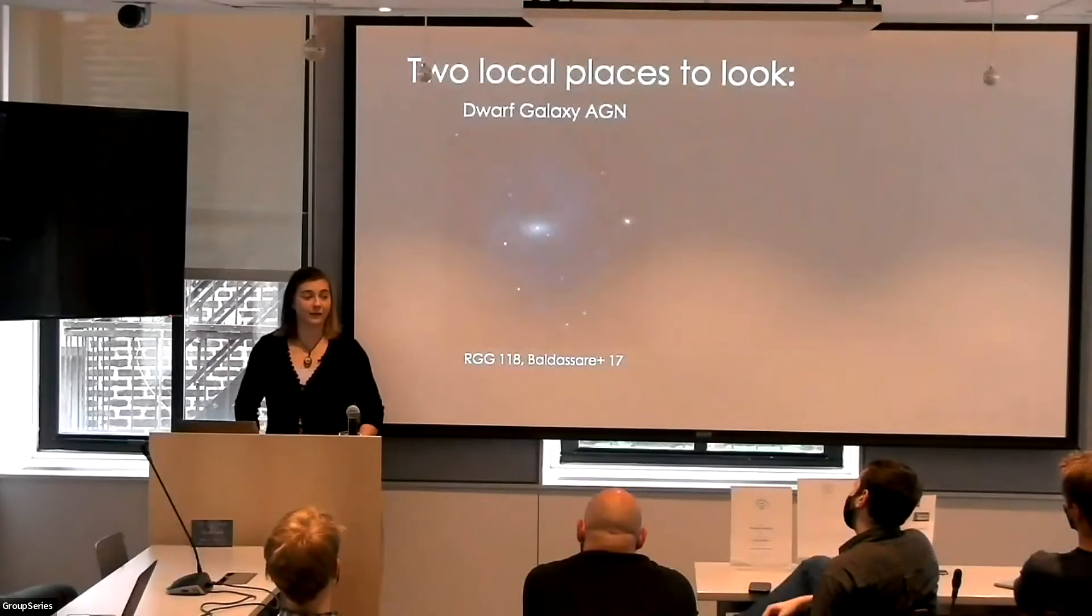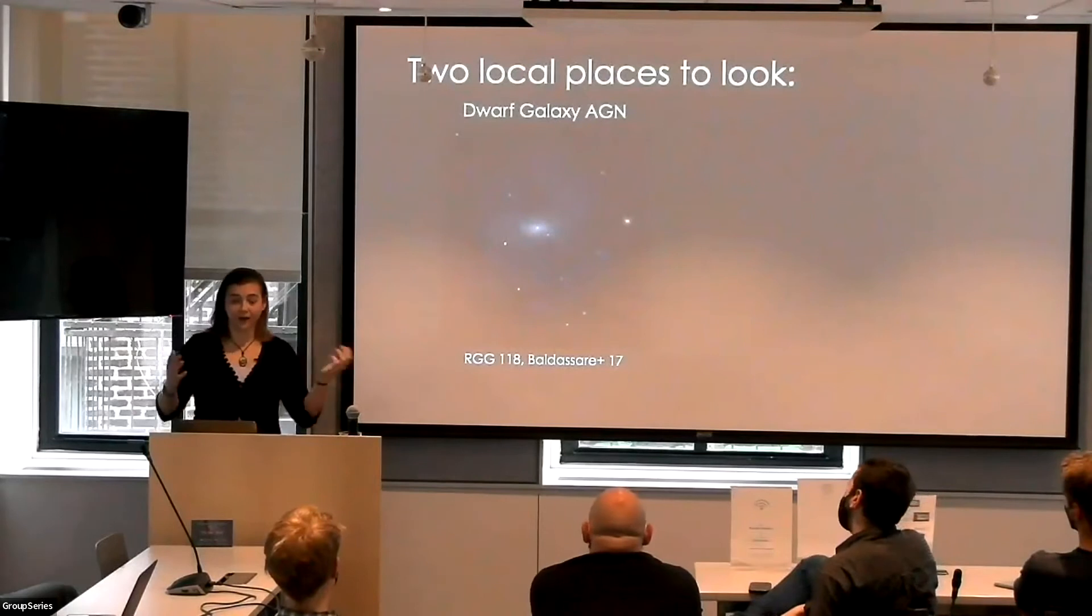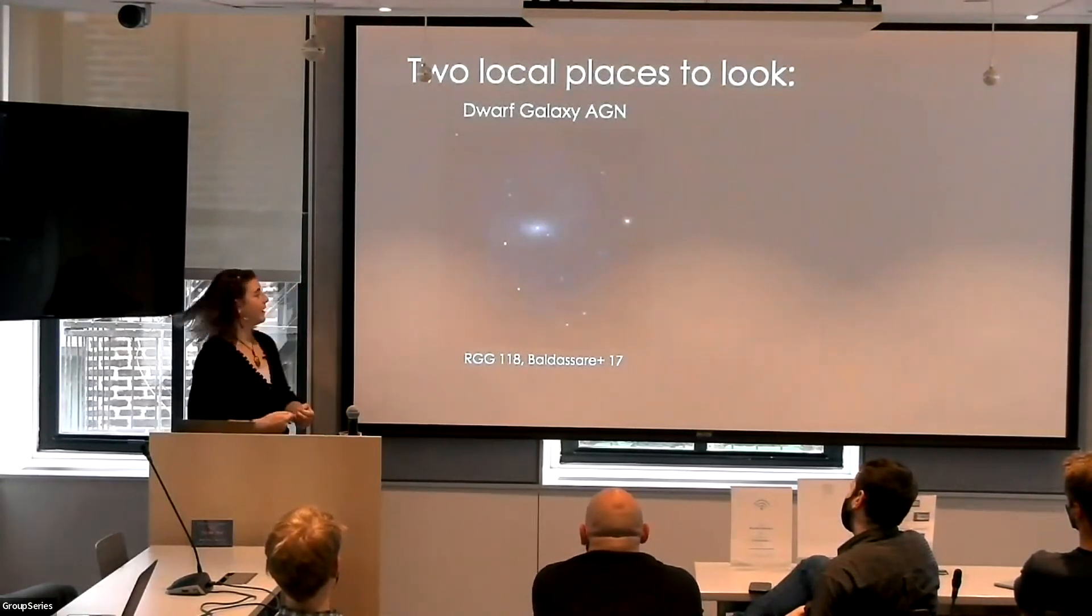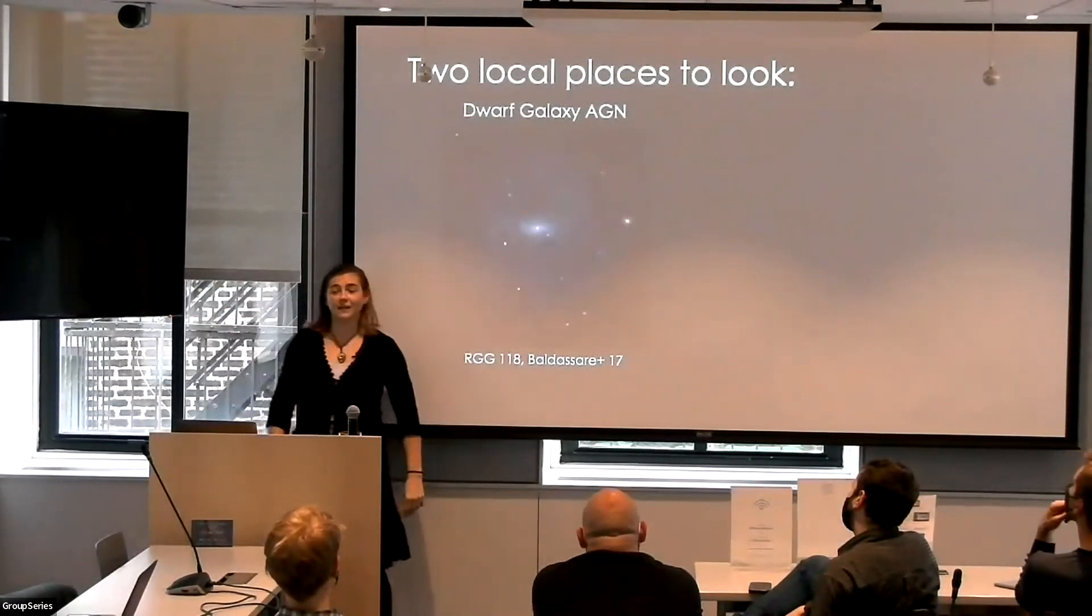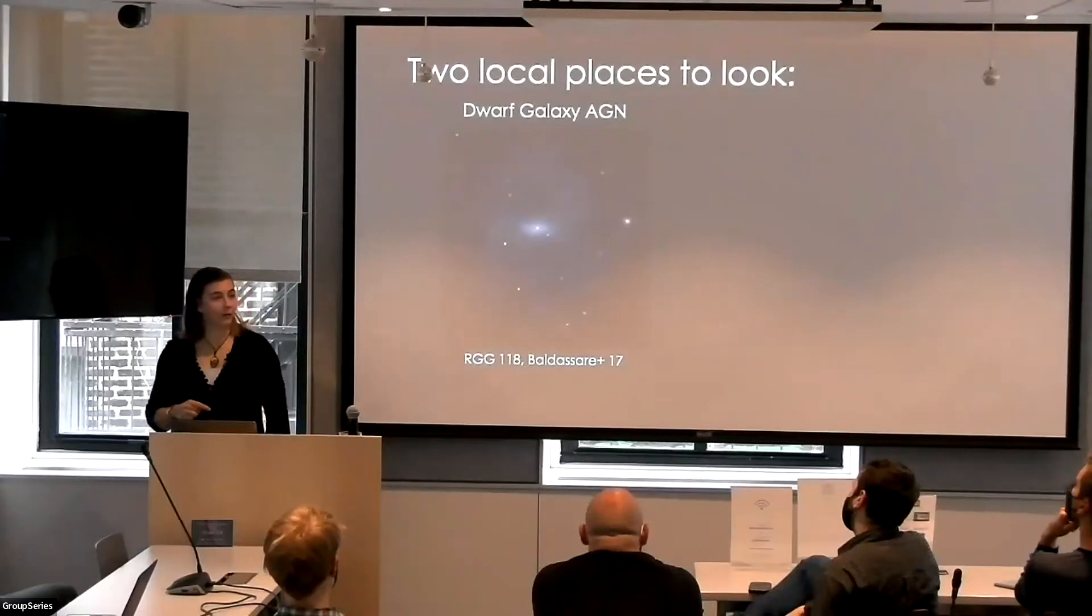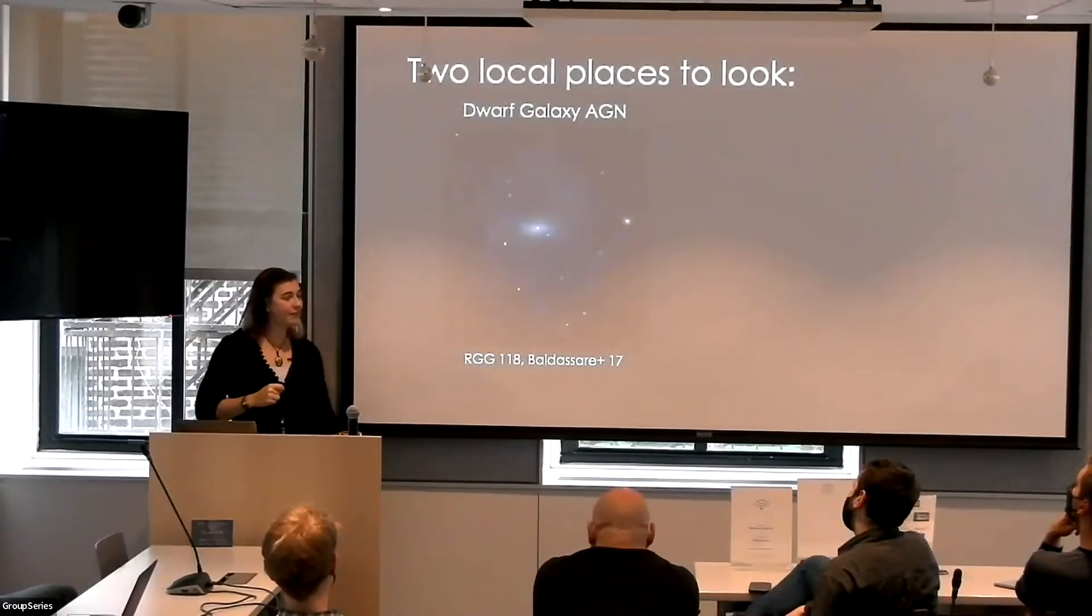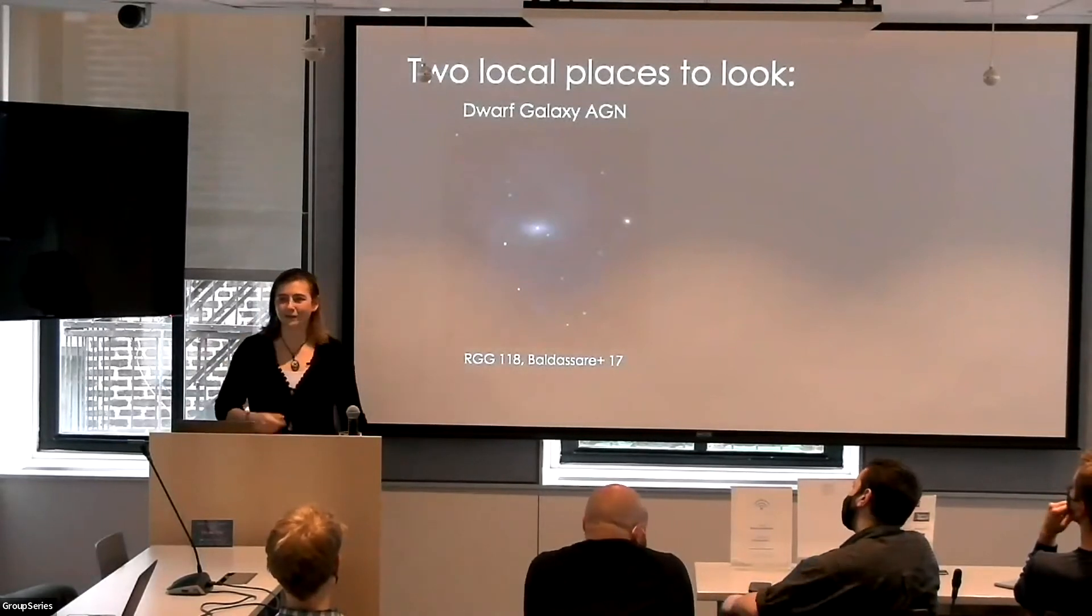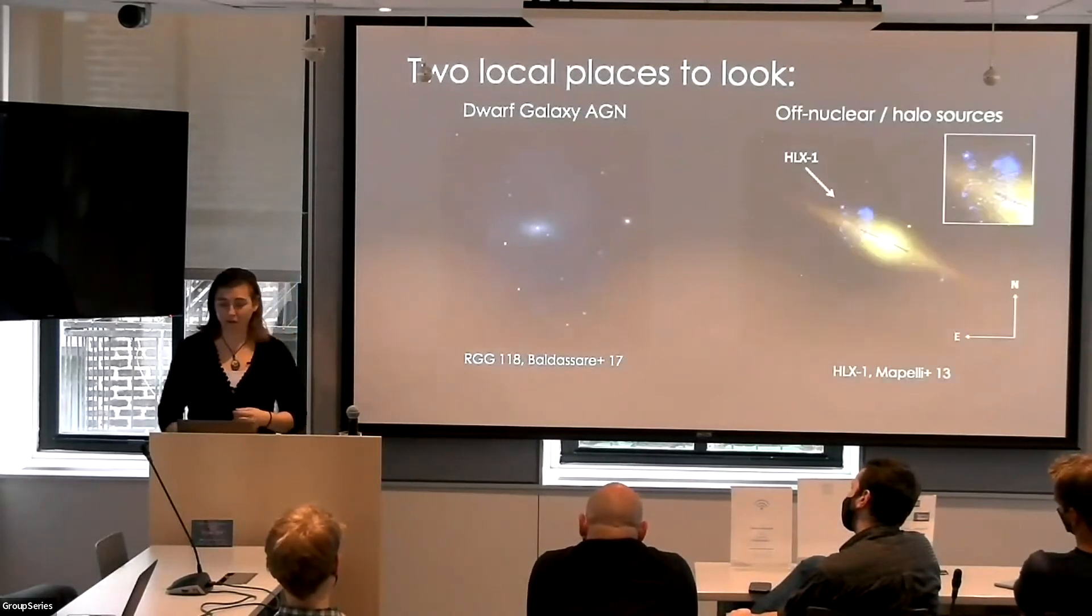But if we could find intermediate mass black holes that do not have as deep of a history because they have not gotten so big, maybe that can give us a hint as to how supermassive black holes formed. So there's two local places that we can look. One is in dwarf galaxies. We can look for AGN, so active accreting black holes. Here's an example of, well, it's a little hard to see right now.